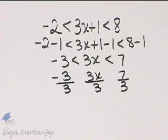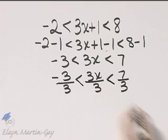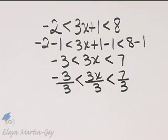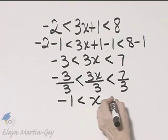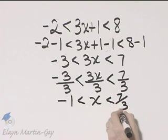Because I'm dividing by a positive number, I do not change the direction of our inequality symbols. So I have negative 1 less than x less than 7 thirds.